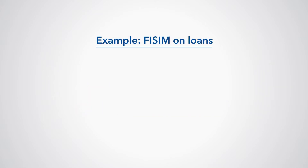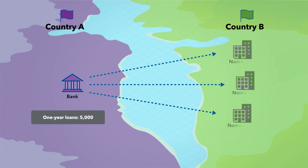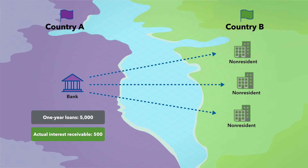Let's look at an example of FISIM on loans. Bank A, a resident of Country A, has 5,000 outstanding in one-year loans to non-resident non-financial corporations. The actual interest receivable on these loans is 500, implying an annual rate of interest of 10%.